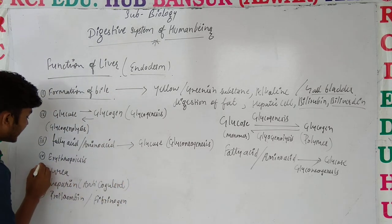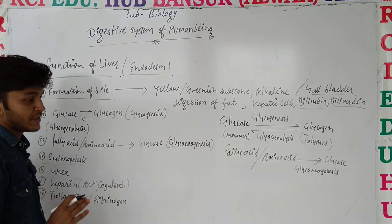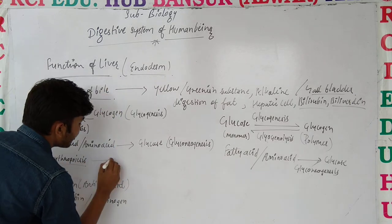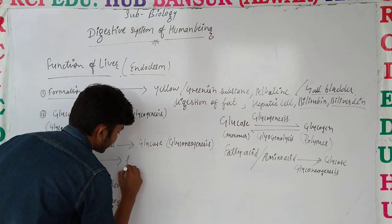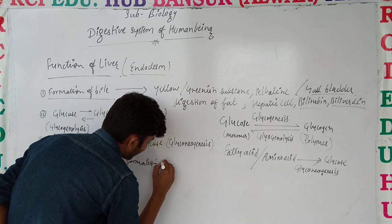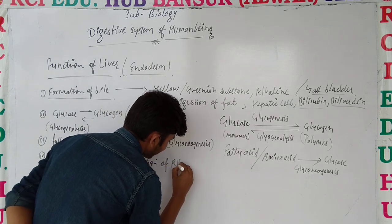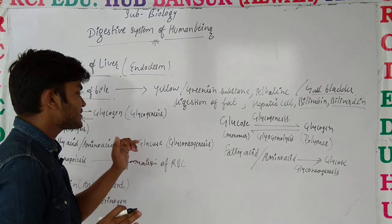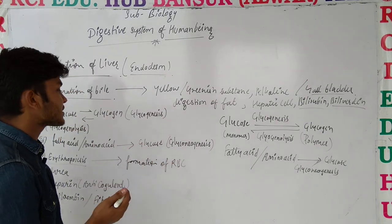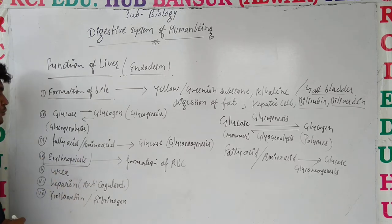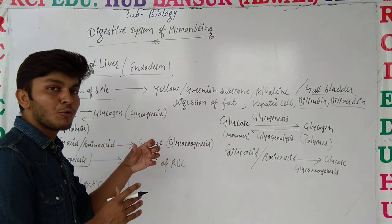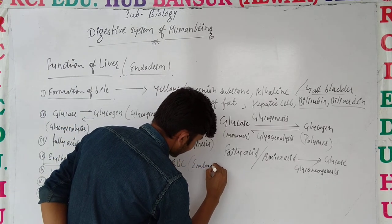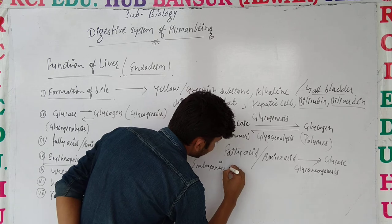इसके बाद बात करते हैं fourth function — that is erythropoiesis. Initially, during the embryonic stage, liver blood को भी form करता है — formation of RBCs. Embryonic stage के अंदर liver के अंदर RBCs form होती हैं, and the process through which this is happening is known as erythropoiesis, but during embryonic stage only.